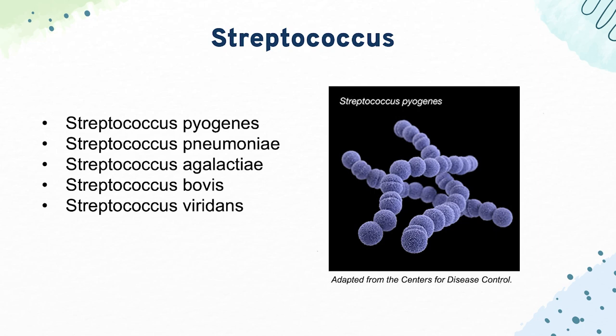We're going to start with our streptococci. First we have Strep pyogenes, which causes pharyngitis, scarlet fever, and impetigo with that honey-crusted rash. Next, we have Strep pneumo, which causes a mnemonic of symptoms called MOPS: meningitis, otitis media, pneumonia, and sinusitis.